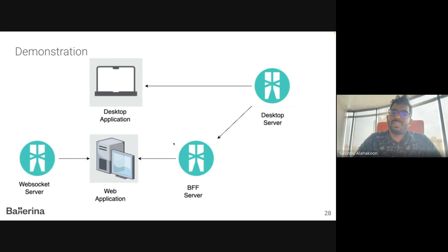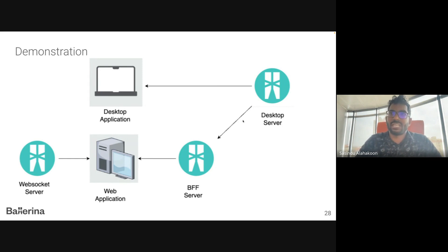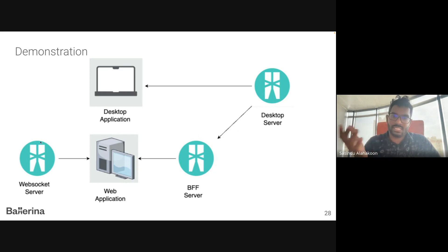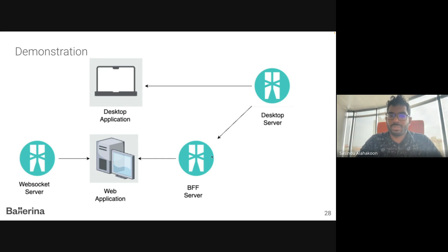This BFF layer is responsible for handling the communication between the back-end and the web front-end by converting data formats. Also, as a new feature, the new web application needs a WebSocket server to handle the real-time location of orders. I will now show how this BFF scenario can be handled using Ballerina.